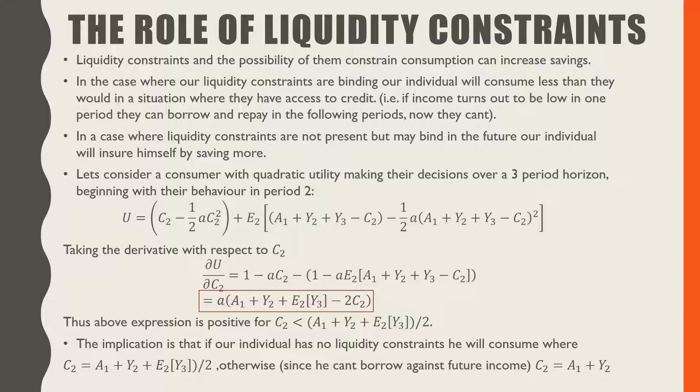In the case where we have liquidity constraints, our individual can't borrow against his future income. In a case where liquidity constraints are not present but may bind in the future, our individual is going to save more to insure himself against such a situation.